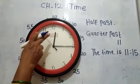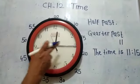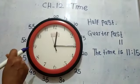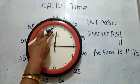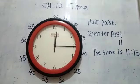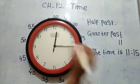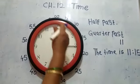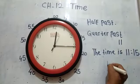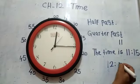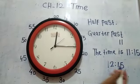Look here — the given clock shows the time quarter past twelve. And how to write it? Quarter past twelve — 12:15.